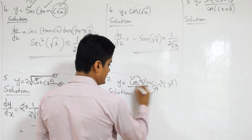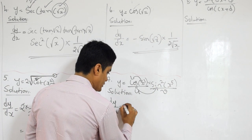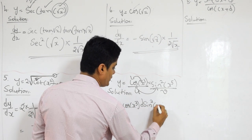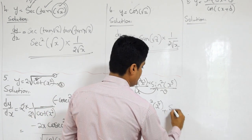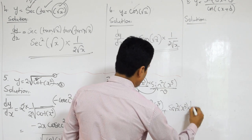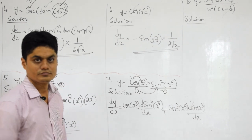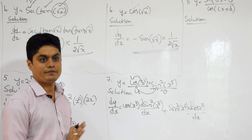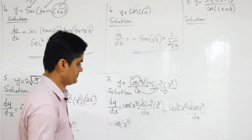What is the product rule? Remember: this full thing is U, this full thing is V. So what is the product rule? U into differentiation of V — that is cos of X cubed — into differentiation of sin squared of X to the power 5, plus sin squared of X to the power 5 into differentiation of cos of X cubed. What we did now? We just applied the product rule — differentiation has not actually started yet.